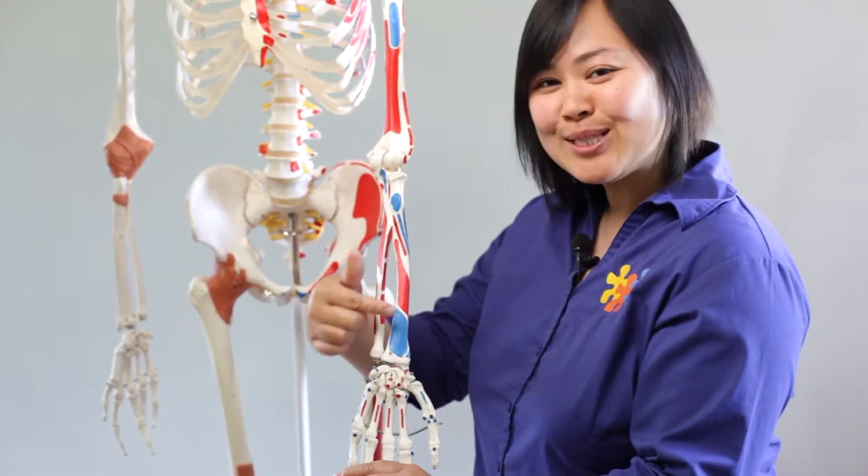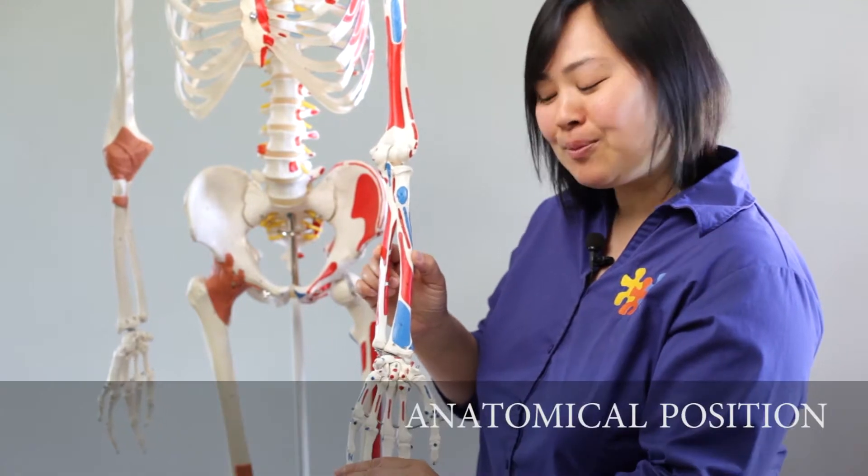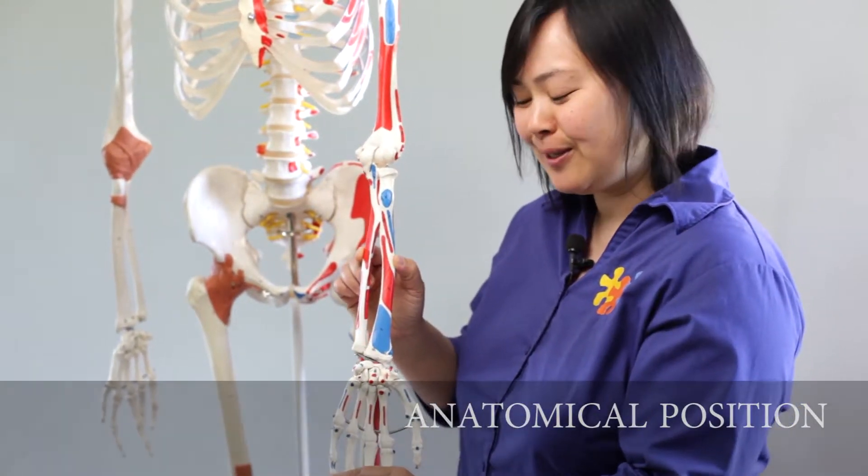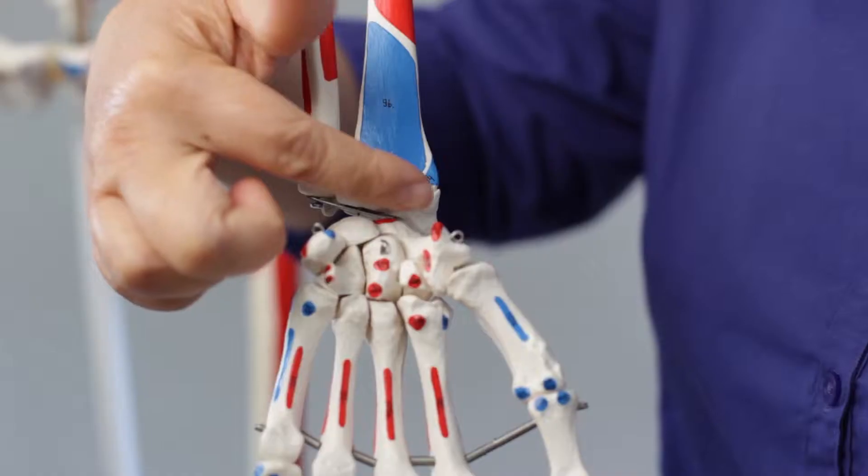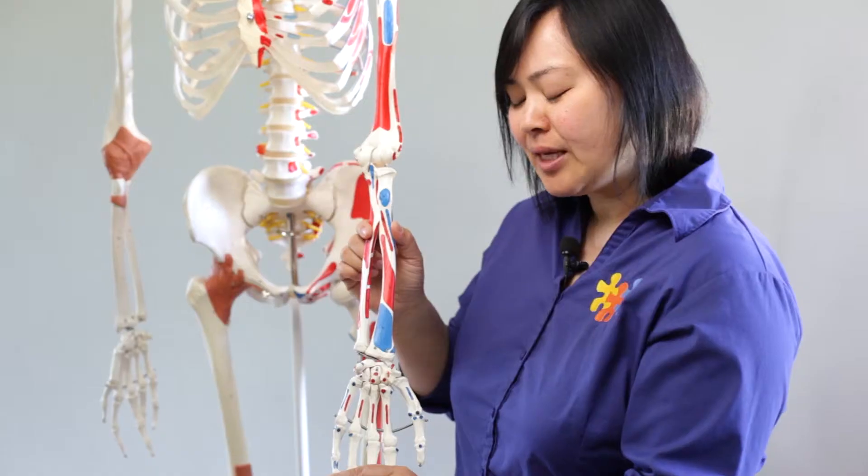This video is about the wrist complex. Whenever we consider movement of the wrist complex, we need to put the hand into anatomical position with the palm side forward. The primary bones that make up the wrist complex are the proximal row of the carpal bones, the radius, and the ulna.